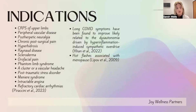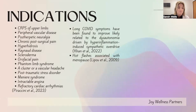There are many indications for the stellate ganglion procedure. Common ones include post-herpetic neuralgia, chronic post-surgical pain, Raynaud disease, orofacial pain, phantom limb syndrome, vascular headaches, PTSD and its associated symptoms, Meniere syndrome, refractory cardiac arrhythmias such as POTS, long COVID — which has become quite common, related to dysautonomia driven by hyperinflammation-induced sympathetic overdrive — and hot flashes associated with menopause.